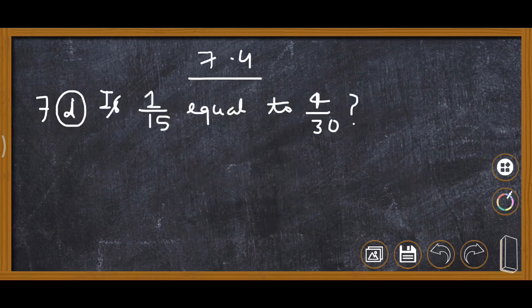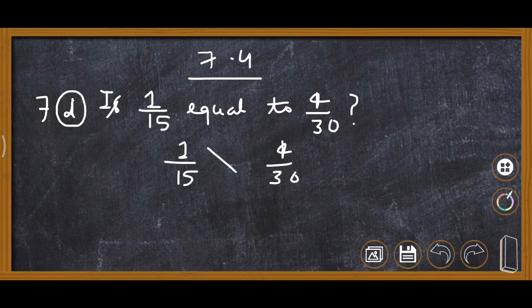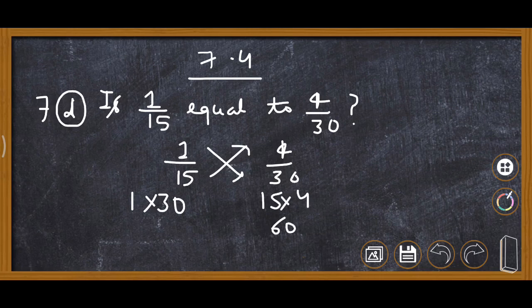Now Question 7d: is 1 upon 15 equal to 4 upon 30 or not? We write 1 upon 15 and 4 upon 30, then cross multiply. 1 multiplied by 30 is 30, and 15 multiplied by 4 is 60. Both sides are not equal, so the answer is no — 1 upon 15 is not equal to 4 upon 30.